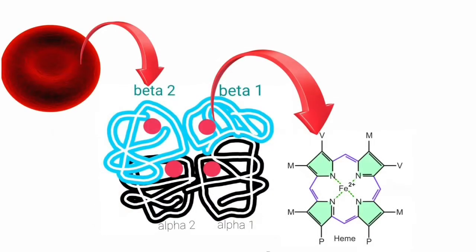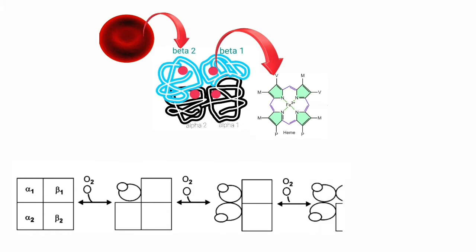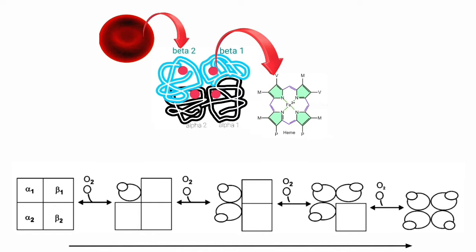There are four heme groups in each hemoglobin molecule. Binding of oxygen to one heme residue increases the affinity of remaining heme residues for oxygen. This is called positive cooperativity.